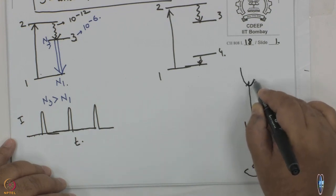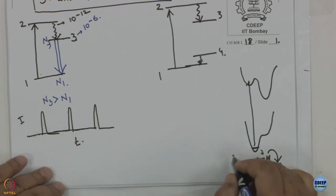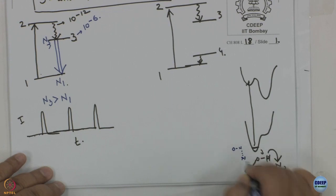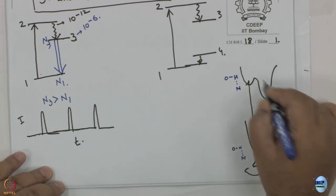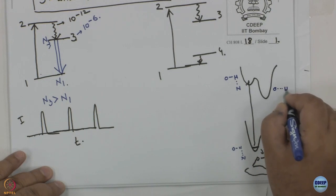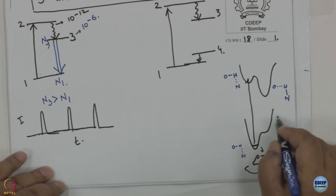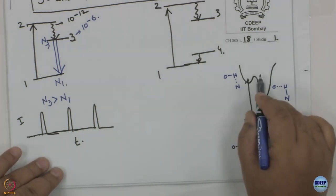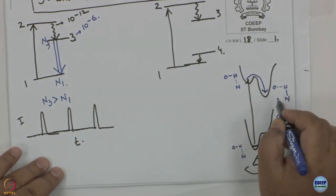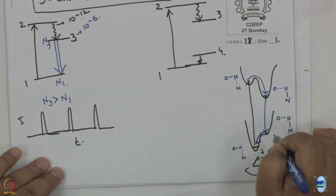The locally excited state is no longer energetically stable, so when you excite you reach a state that is energetically less stable on the excited-state potential energy surface. The excited-state surface thus has a different shape: after proton transfer, the hydrogen is covalently bonded to N and hydrogen-bonded to oxygen in the ground state. If proton transfer is sufficiently facile, you excite and immediately proton transfer takes place.